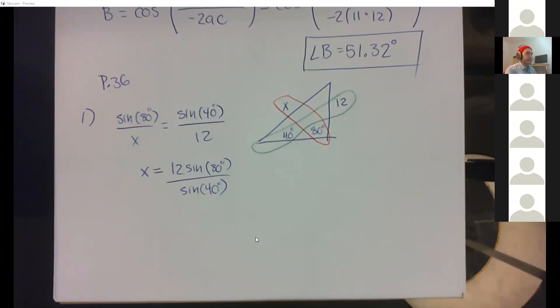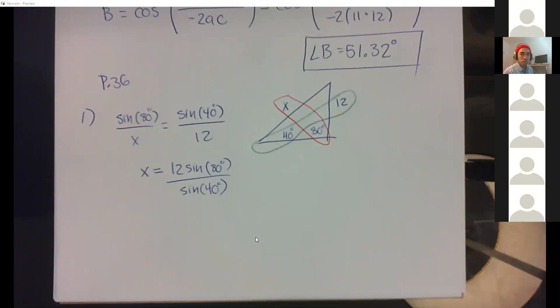Pro tip: that second homework is labeled 'Sign Law and Cosine Law' with '2011 Kuta Software LLC' at the bottom. Kuta Software's worksheets along with solutions are all over the internet. If you google any math skill name along with 'Kuta,' the first link is usually a PDF with both the questions and the answers included — one of the easiest ways to find extra practice.